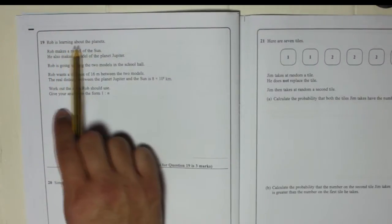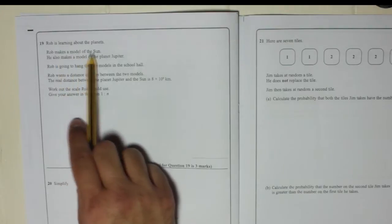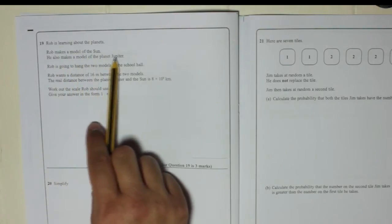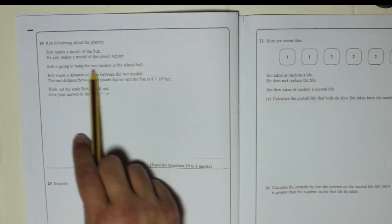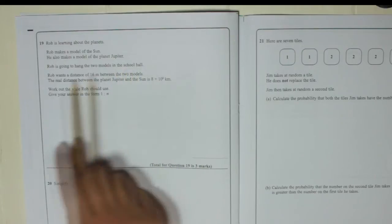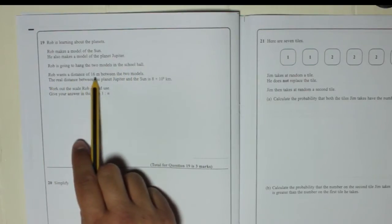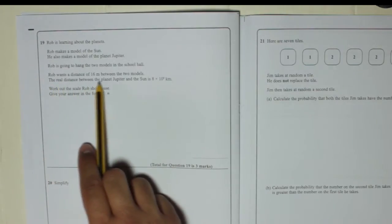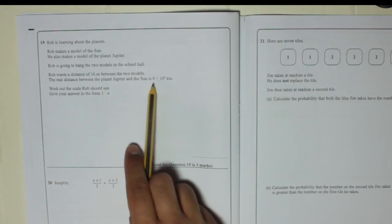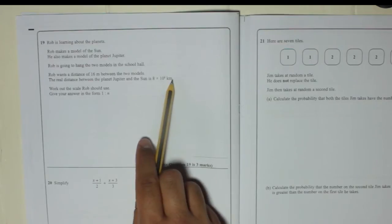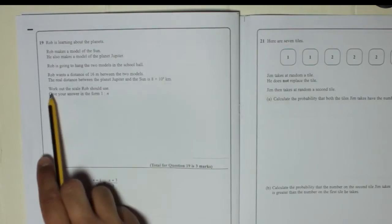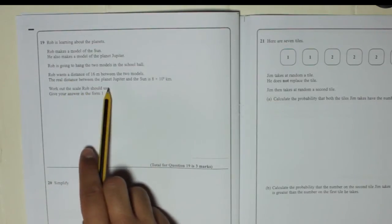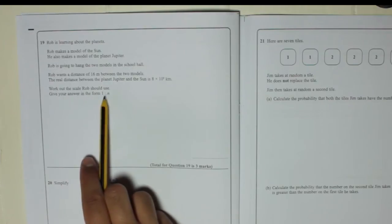Question 19. Rob is learning about the planets. Rob makes a model of the Sun. He also makes a model of the planet Jupiter. Rob is going to hang the two models in the school hall. Rob wants a distance of 16 metres between the two models. The real distance between the planet Jupiter and the Sun is 8 times 10 to the power of 8 kilometres. That's standard form there. Work out the scale Rob should use. Give your answer in the form 1 to n.